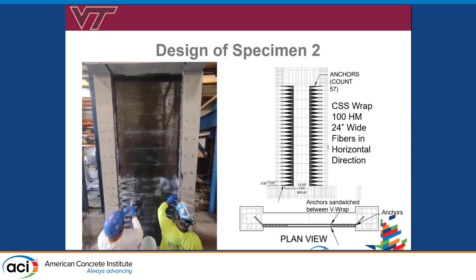Now onto our retrofitted specimen — the fiber reinforced polymer. This is a picture of the installation. The fiber reinforcement, generously donated by Simpson StrongTie, was anchored into the pilasters about six inches. The anchors are sandwiched between two sheets of fiber reinforced polymer aligned in the horizontal direction, which is the main strength improvement we're hoping to achieve.